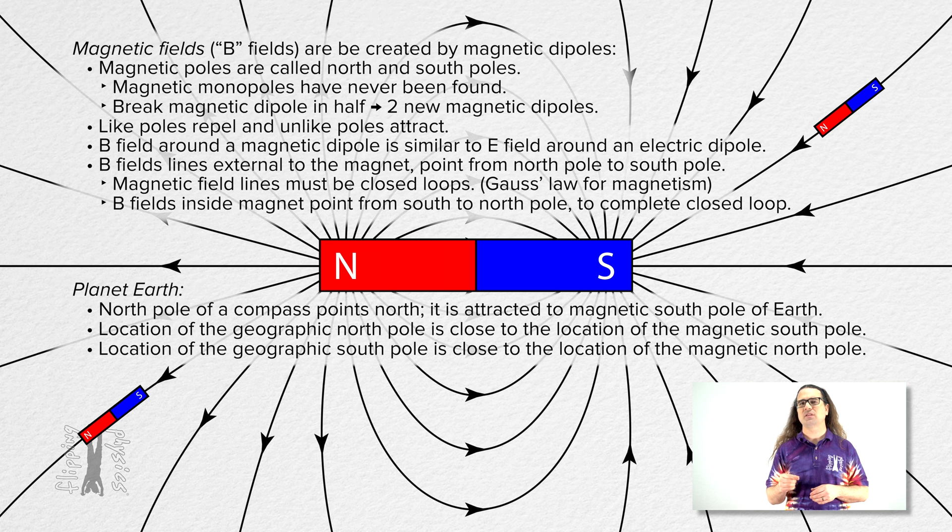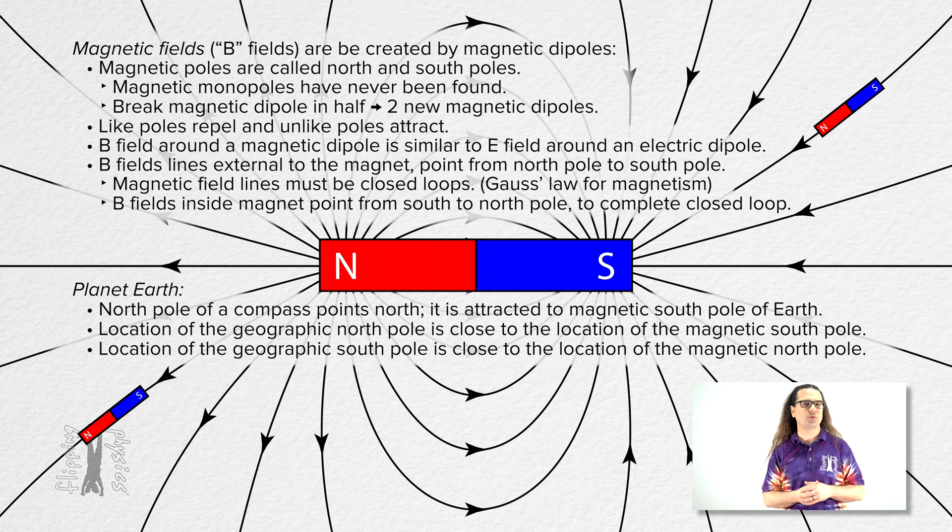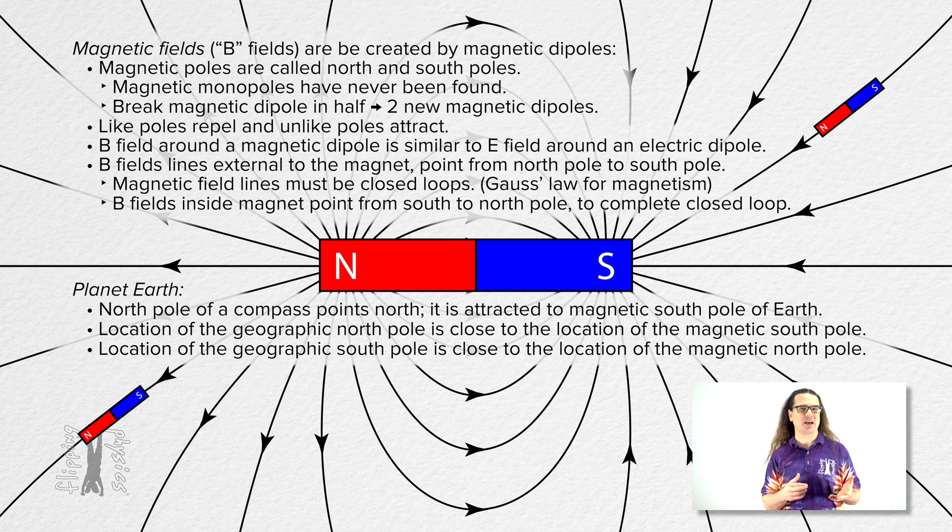Although I do want to point out that the locations of the magnetic poles of the earth do not perfectly coincide with the locations of the geographic poles of the earth. And the magnetic poles of the earth do move around a bit over time. In fact, the magnetic poles of the earth have completely reversed many times in earth's history. It's been roughly 780,000 years since the last time the earth's magnetic field changed.